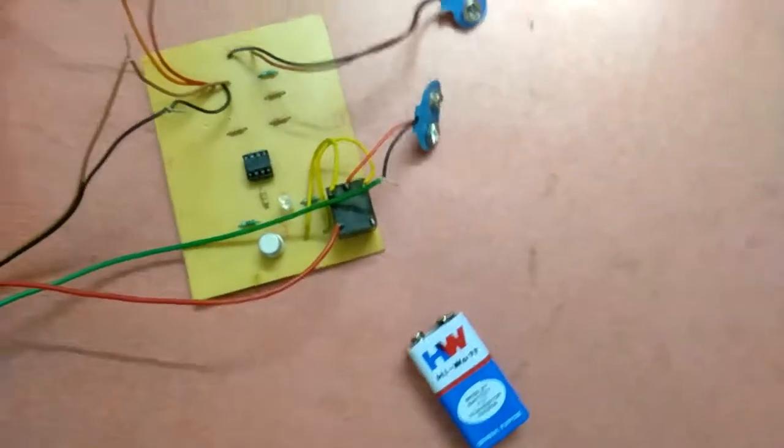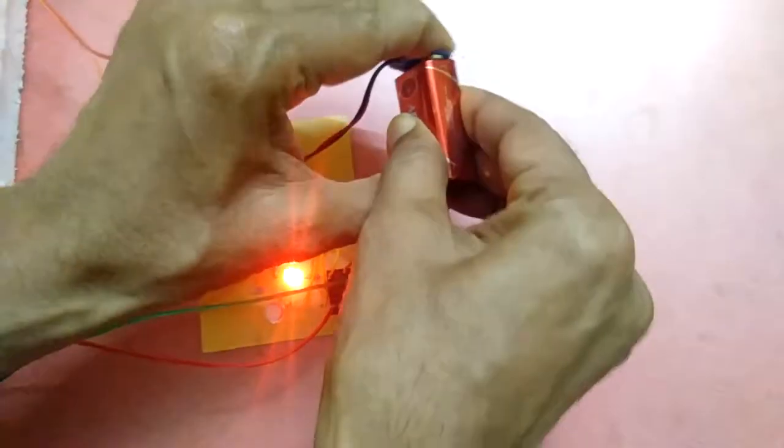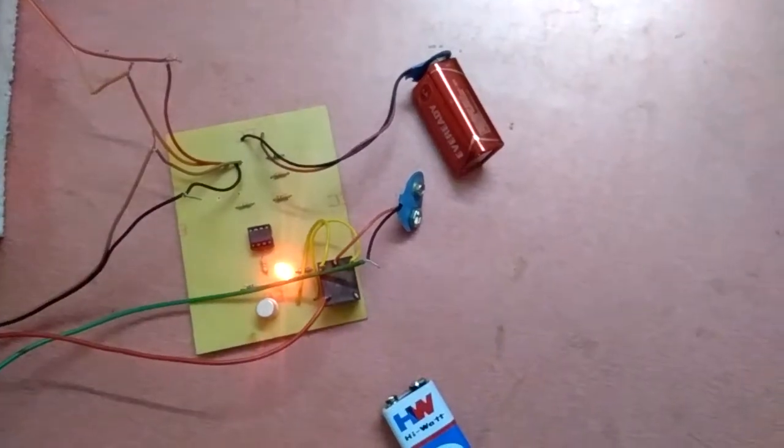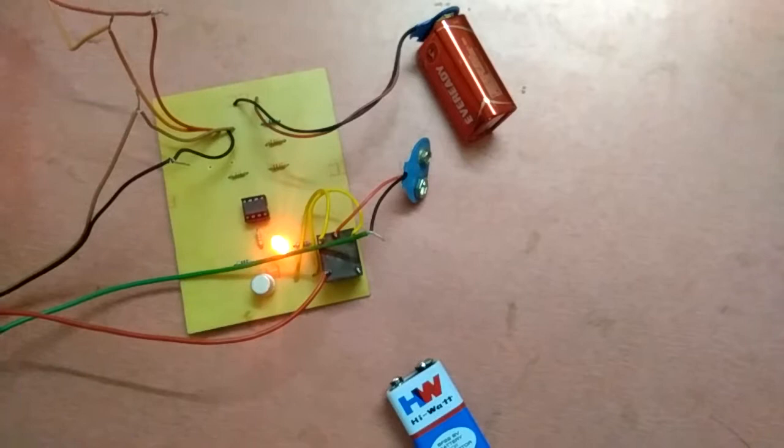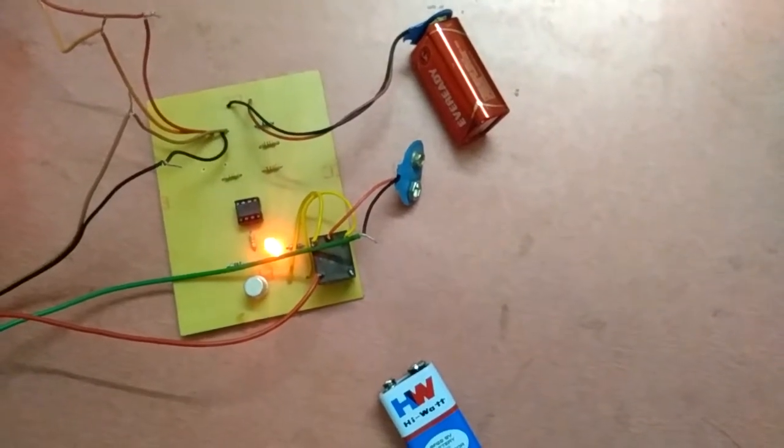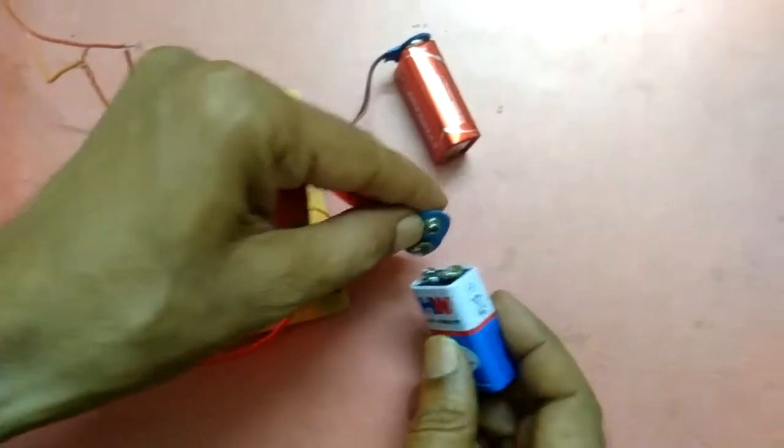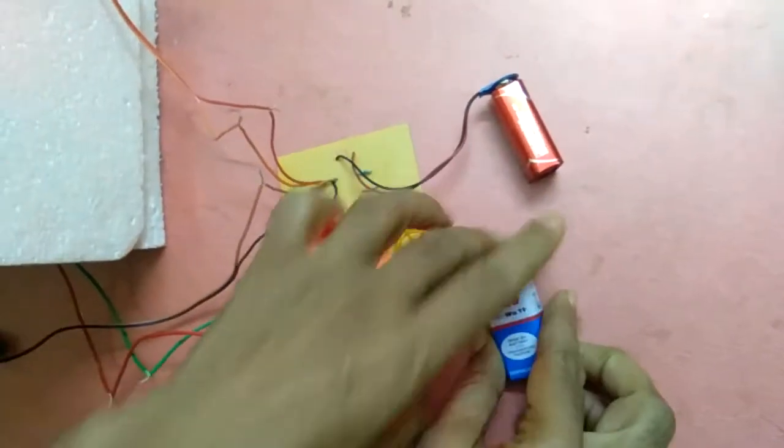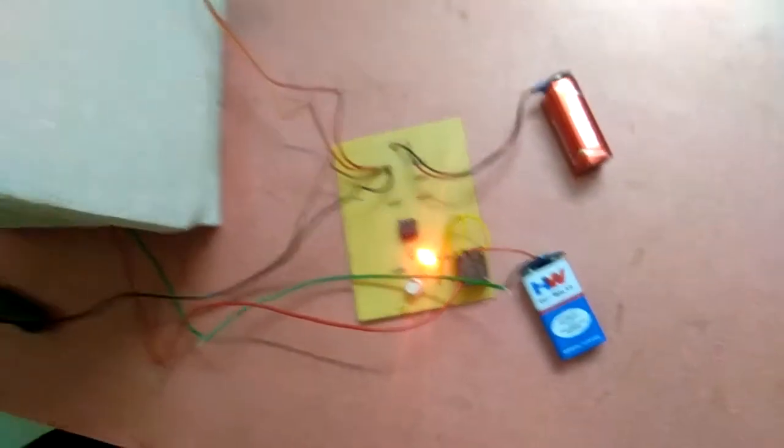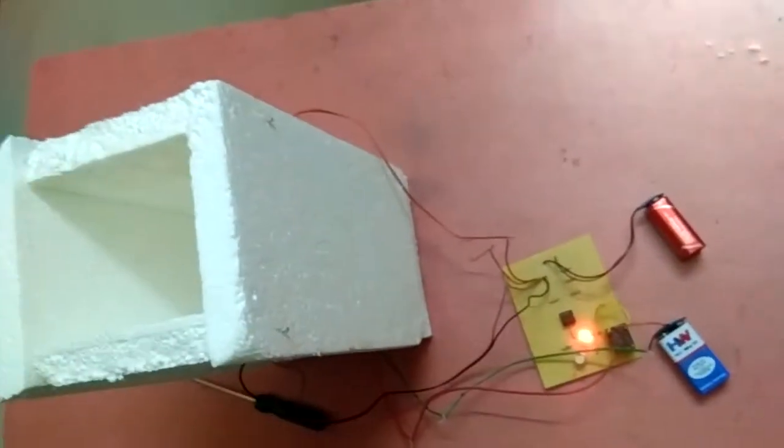First, you connect the batteries. After the connection, the red LED on the PCB is glowing, which means the circuit is ready and working properly. Then you connect one more battery to drive the output. Now the circuit is powered by two batteries. I will now drop this letter.